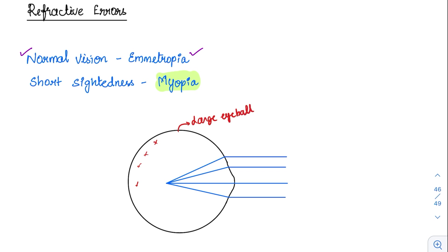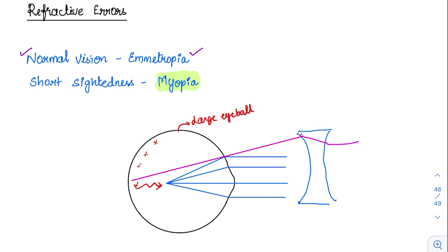Because of the large eyeball in myopia, rays focus in front of the retina. The solution is to diverge the rays using a concave lens. With a concave lens, the entering rays get diverged and can finally be focused on the retina, correcting the vision.